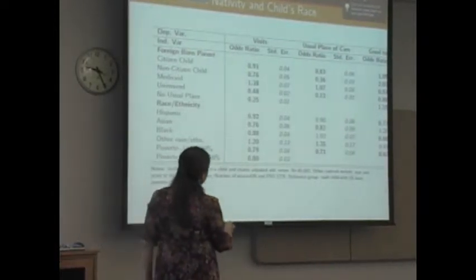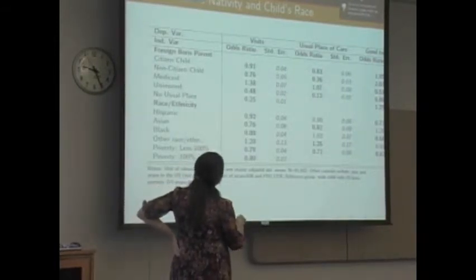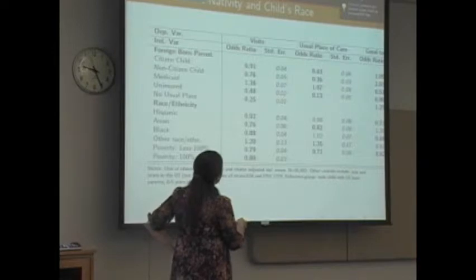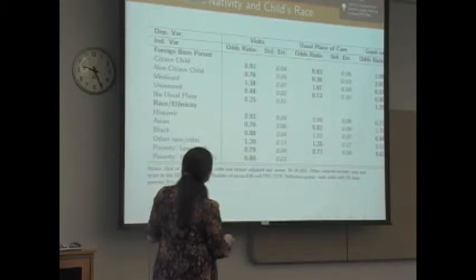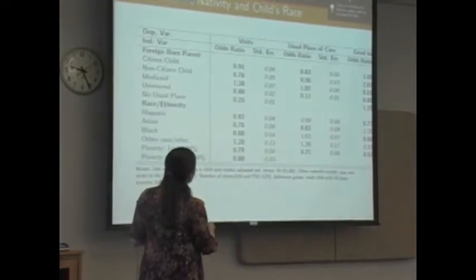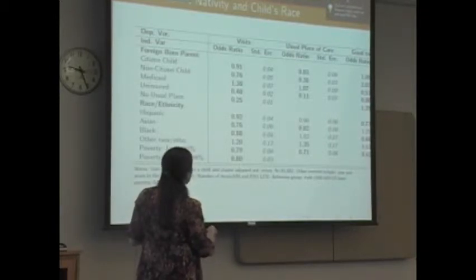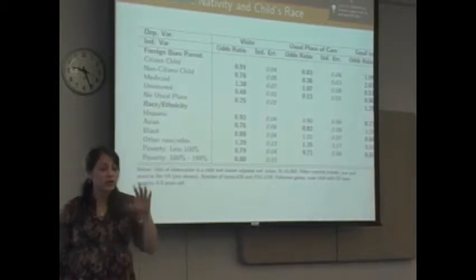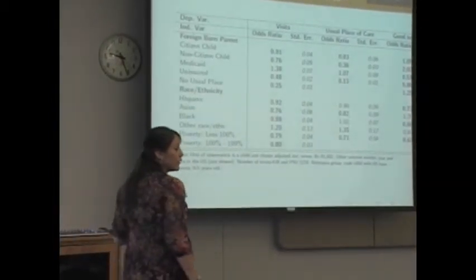Poverty also is an important factor in terms of having visited a doctor. When we look at usual place of care, we find similar results, consistent with the previous findings. If they don't visit the doctor at least once, most likely they also don't have a usual place of care. A non-citizen child of a foreign-born parent got an odds ratio of 0.36 — much lower than a white child of a native-born family.